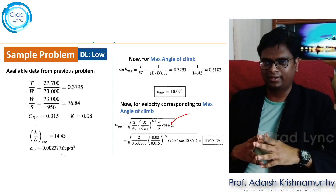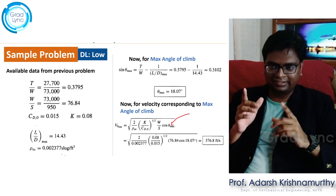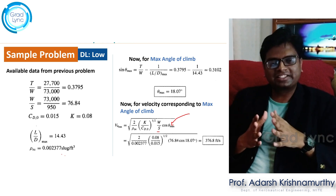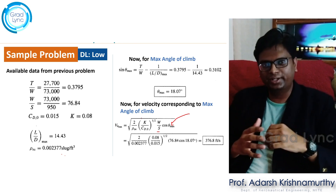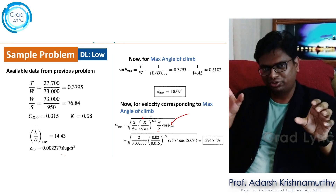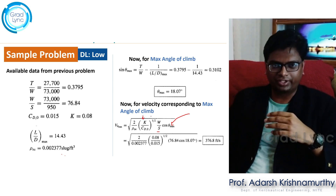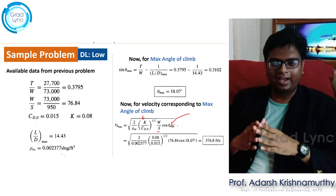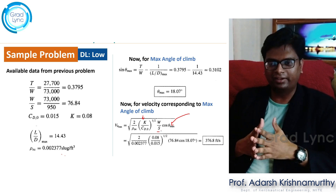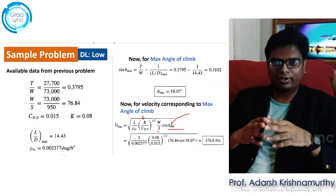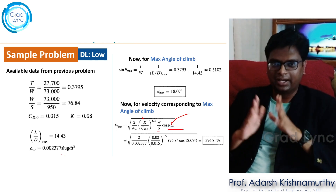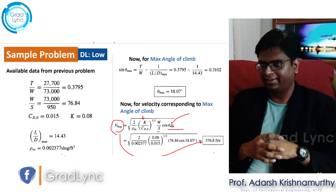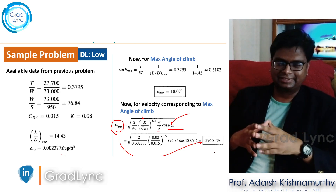Next, we calculate the velocity corresponding to maximum angle of climb. We substitute into: V_θmax = √(2/ρ_∞ · √(K/CD_naught) · (W/S) · cos(θ_max)). Here, √(K/CD_naught) comes from the condition that at maximum L/D, parasite drag equals induced drag coefficient (CD_naught = K·CL²), giving CL = √(CD_naught/K). Substituting all values, we get velocity = 376.8 feet per second. The physical significance: if you want to climb the aircraft at 18.07 degrees, it must fly at 376.8 feet per second.